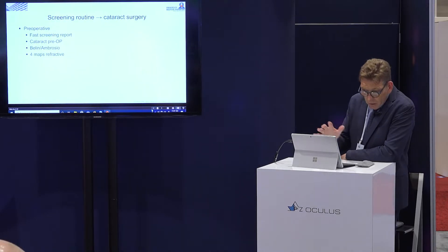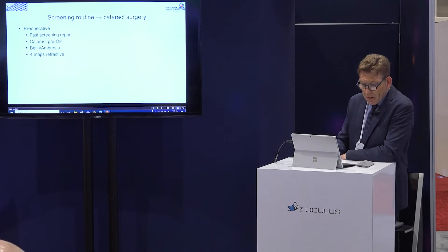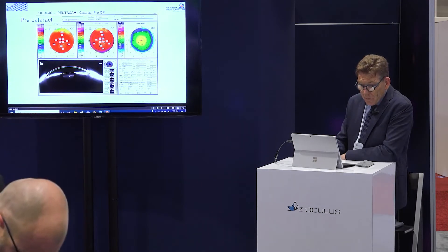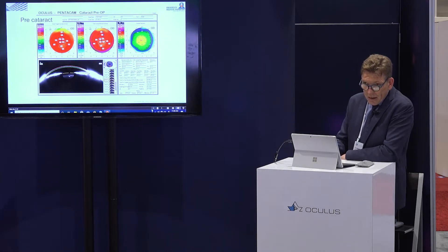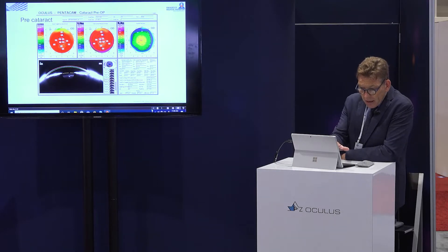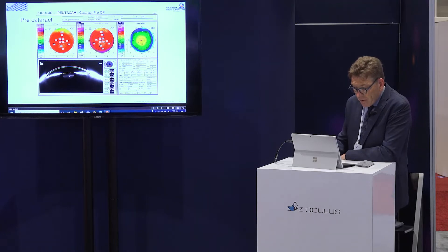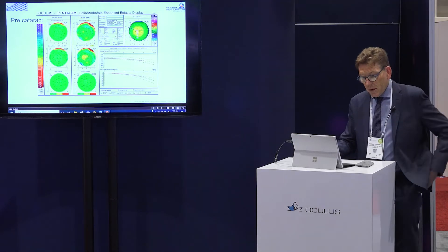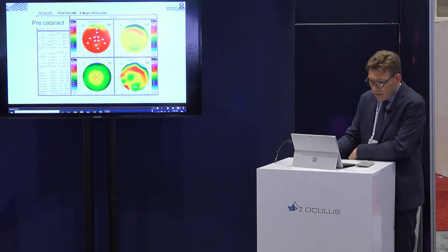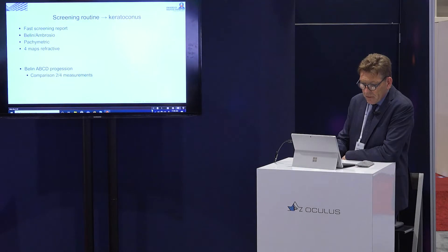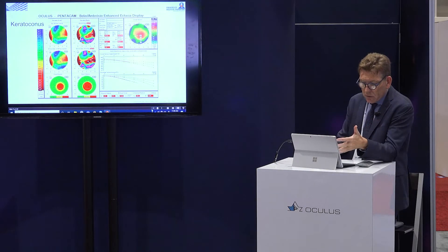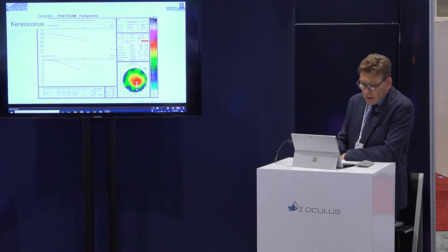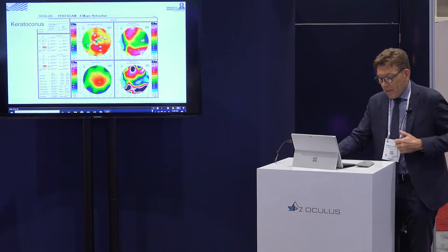In cataract surgery we also perform pre-op cataract screening using the fast screening report and Belin-Ambrosio formats. The pre-cataract map shows axial data, total corneal power, corneal thickness, and posterior and anterior measurements. For keratoconus, the red marks make it very clear — you can see it already in the tomography, so it is a no-brainer. Here is the keratoconus on the screening map — important for cross-linking and for ruling out patients from refractive surgery.